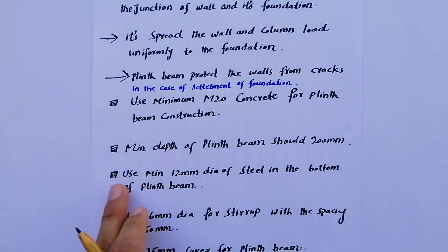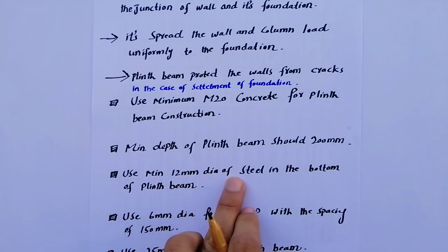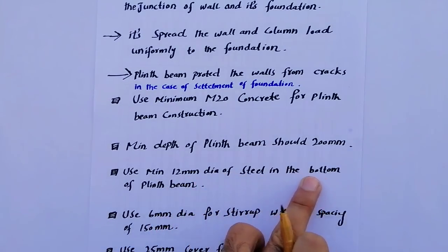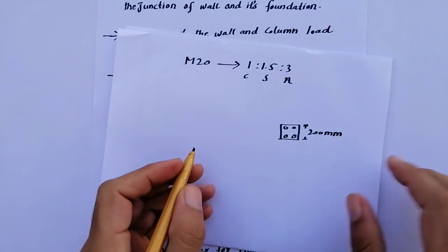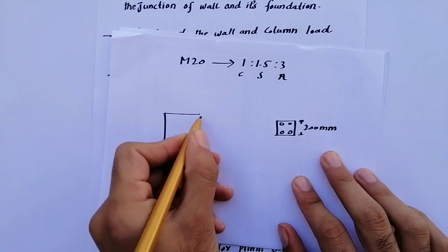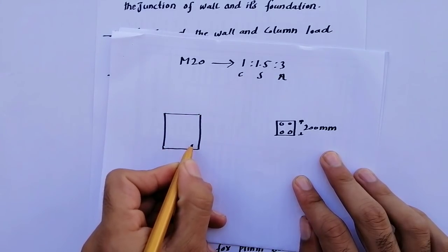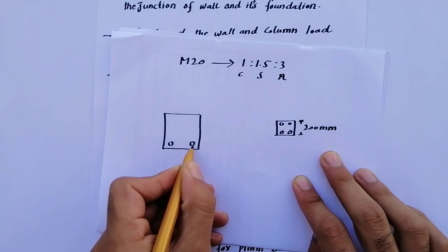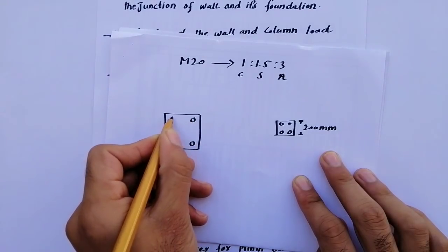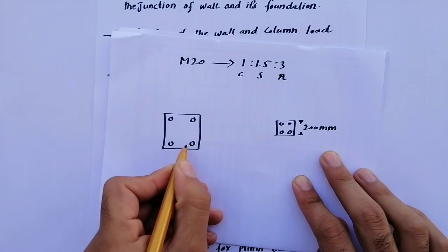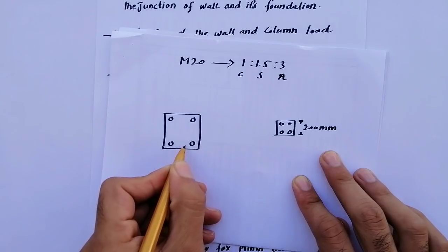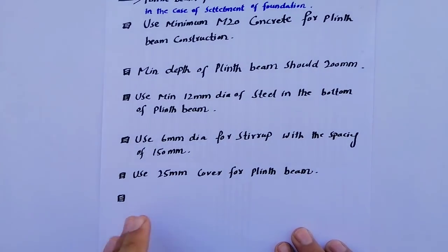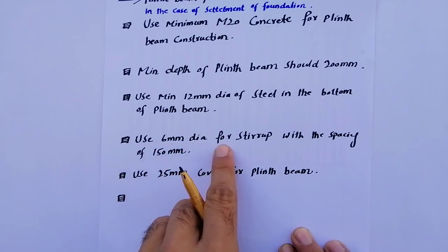The third point: use a minimum 12 millimeter diameter of steel in the bottom of the plinth beam. As shown in this plinth beam cross section, use minimum 12mm diameter steel at the bottom. You can provide 10mm at the top, but minimum 12mm must be used at the bottom of the plinth beam.